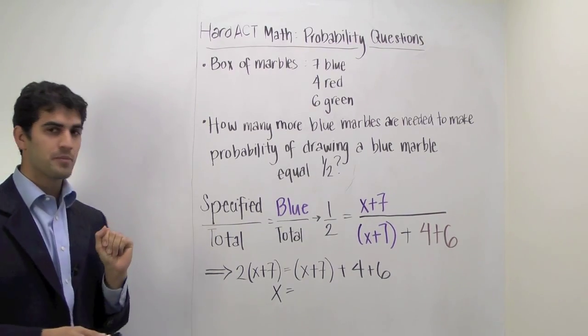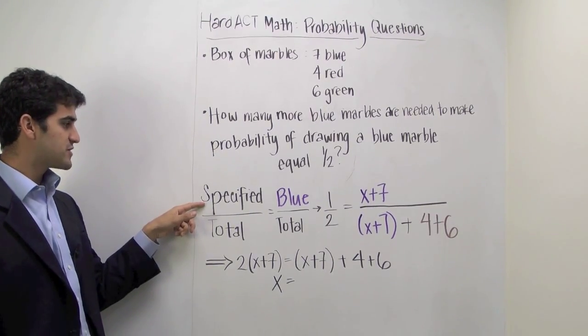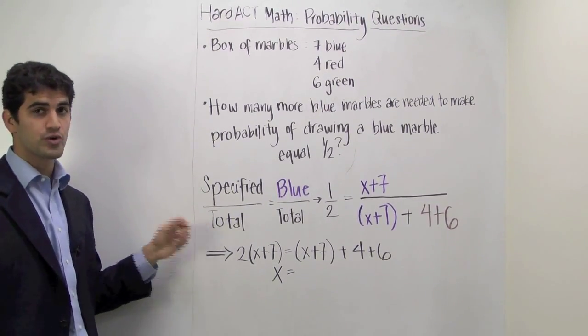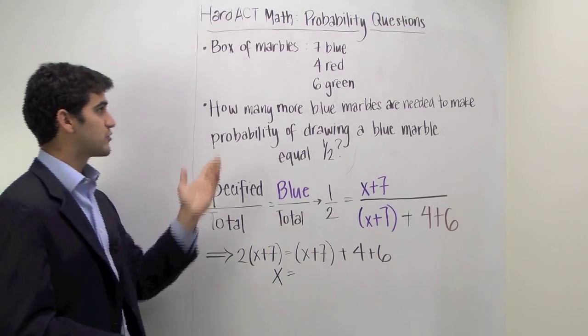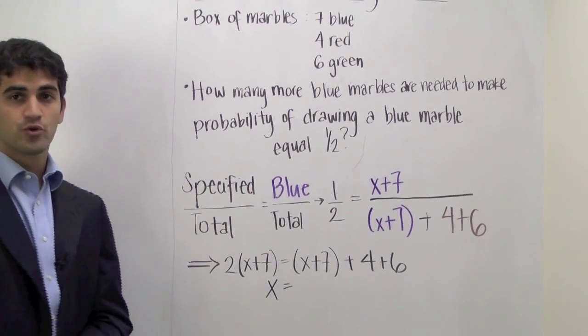It's that when you're dealing with probability, the probability of an event happening is always the number of specified scenarios divided by the total number of scenarios. So in other words, for this problem, we're talking about the number of blue marbles divided by the number of total marbles.